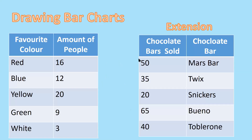This slide gives you two sets of information: the first is the number of people who prefer each favourite colour, and the second is chocolate bars sold by type. I'd like you to draw a bar chart using the left-hand set of information. If it looks too easy, you can use the right-hand side as an extension activity. Pause the video to write down the information or complete the chart.